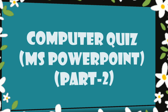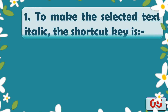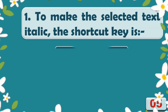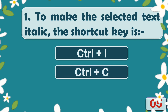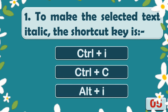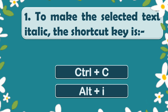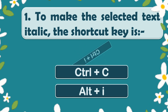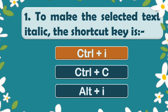To make the selected text italic, the shortcut key is Control plus I.